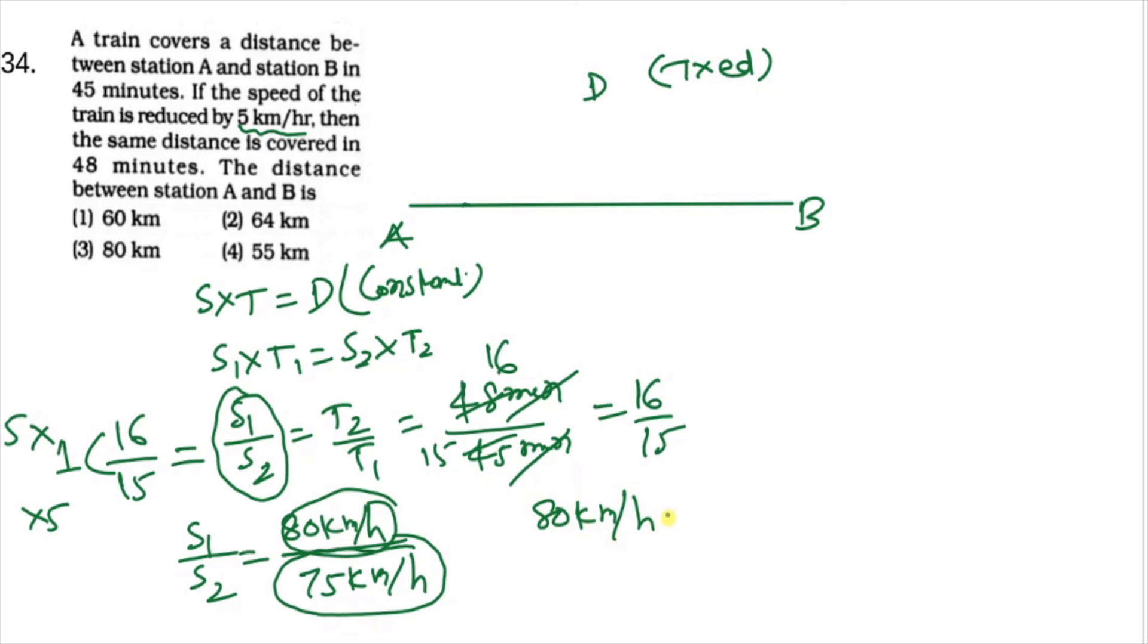At 80 km per hour speed, the total travel time is 45 minutes, which is 45 divided by 60 hours. This value cancels out to give 60 km. So the answer is option 1. You can solve it either way.